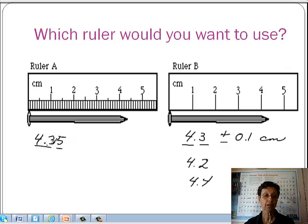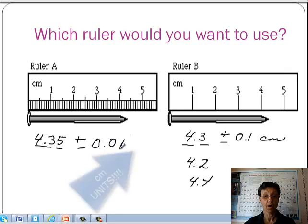How would I represent this? Well, basically I know that this could be four point three six or four point three four. Because this number is estimated. It's up to me to decide what that estimation is. So therefore, I would represent this number plus or minus zero point zero one.